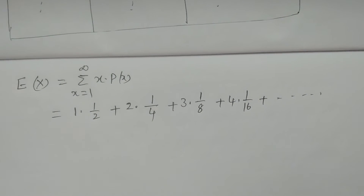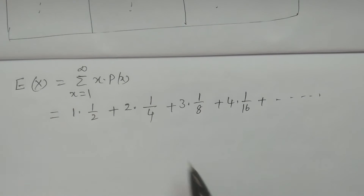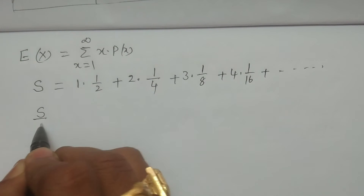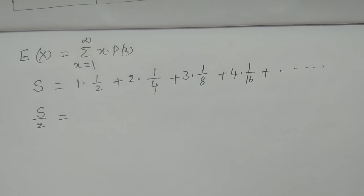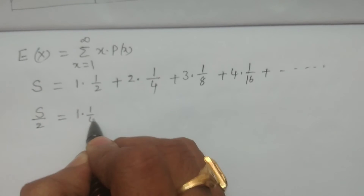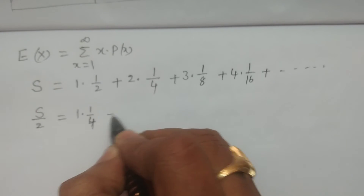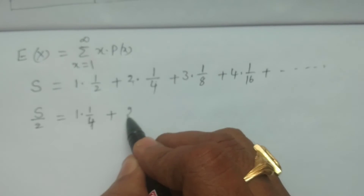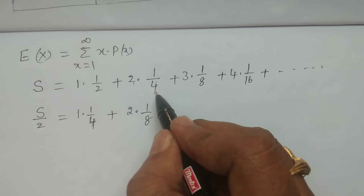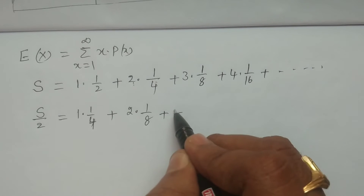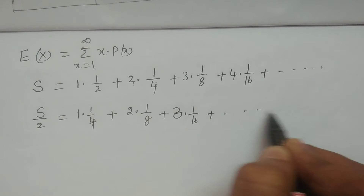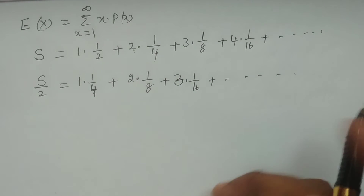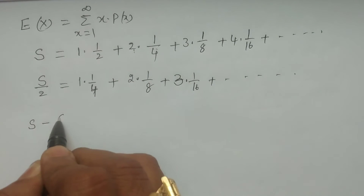This is the expected value of X. To calculate this, let us call it S. Now we calculate S/2. S/2 gives: 1×(1/4) + 2×(1/8) + 3×(1/16) + and so on. Now what we do is subtract S minus S/2.